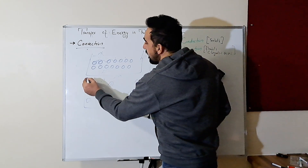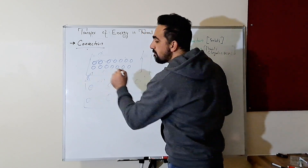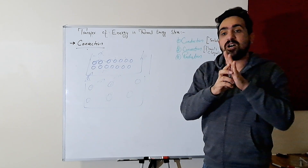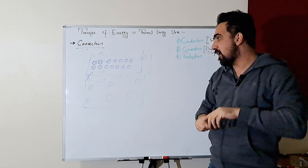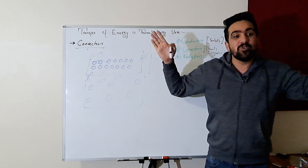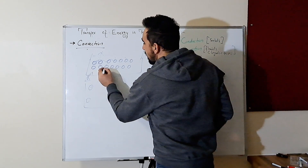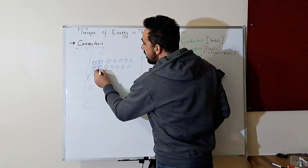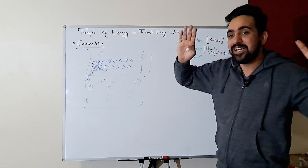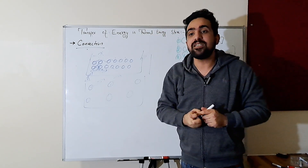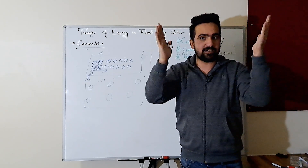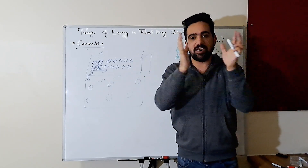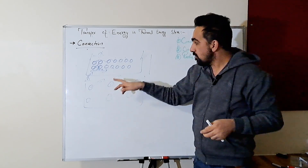So when we provide thermal energy to these particles, the energy — like in conduction — moves to the kinetic energy stores of the particles, and they try to move away from each other. If these particles receive energy, and initially the distance between them was d, the distance will now increase to d plus some extra distance e. So the distance will eventually increase. Now if the distance between particles increases, the density will decrease. Density is how closely packed the atoms or particles are — if they are not very closely packed, the density will be low; if they are very close, the density will be high.